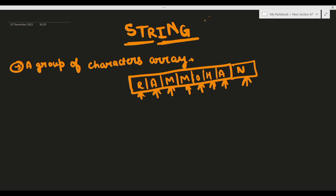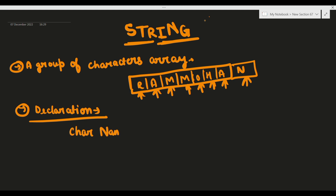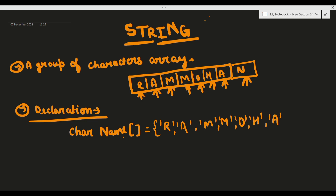Declaration part - इसको हम लोग declare कैसे करते हैं। String को declare करना है तो simply लिखना है char, name के आगे - यह आपका character array बन गई जो कि एक string है। और जो चीज store करनी है वो ऐसे store करेंगे जैसे R, A, M और बाकी characters। याद रखिएगा - यह array one dimensional होती है।